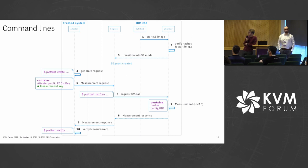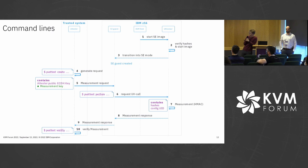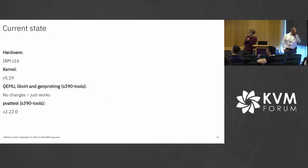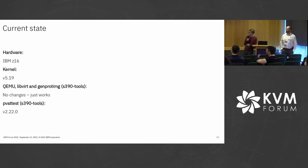We have a new tool to do that called PVAttest. It consists of three commands: 'create' to create the request on the trusted system; 'perform' to do the ultravisor call on our guest; and 'verify' to verify the measurement on our trusted system. The current state is that you need an IBM Z16, and the guest needs kernel 5.19. For creating and generating the secure execution image, no changes are required. PVAttest is included in s390-tools starting in version 2.22.